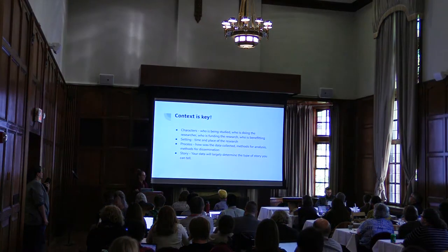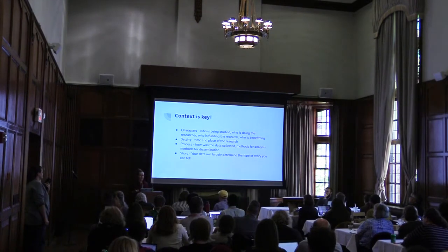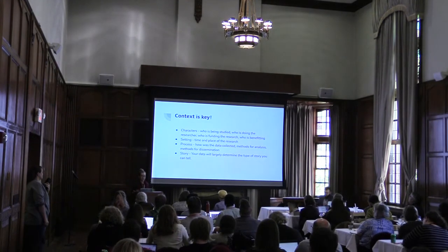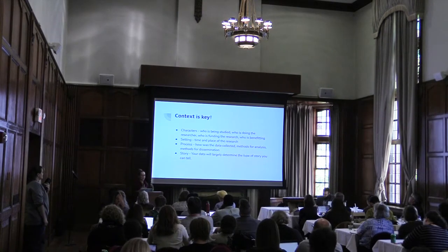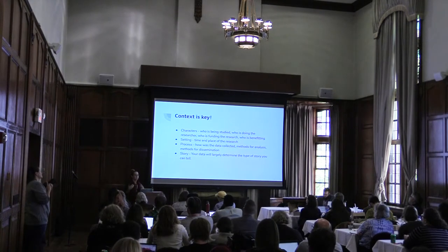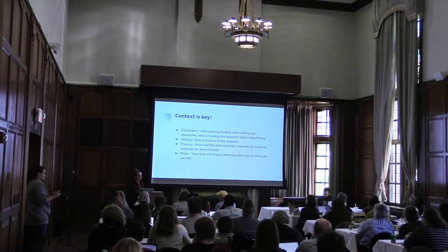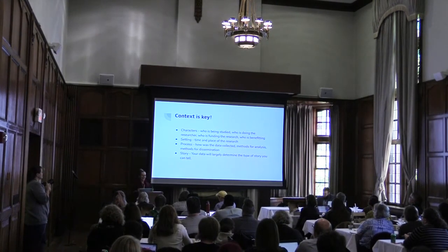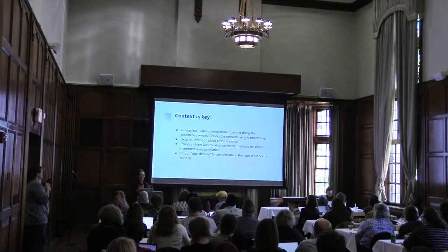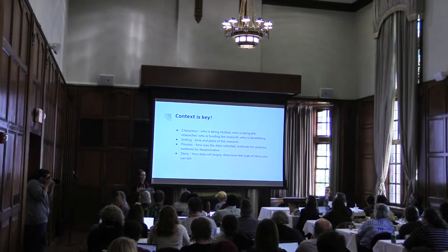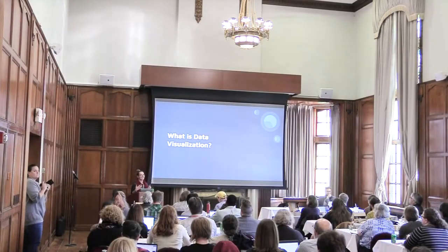The reason I'm going through all these definitions is that all the factors influencing them also come into play when you make a visualization. Tying this back to storytelling: when collecting data, think about the characters — who is being studied, who's doing the research, who's funding it, who's benefiting. The setting — time and place — impacts data definition and visualization. The process, method for analysis and dissemination also influence both. And the core is the story: what type of story are you trying to tell?